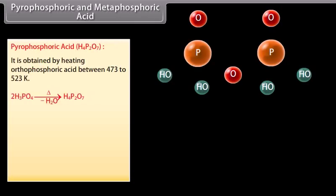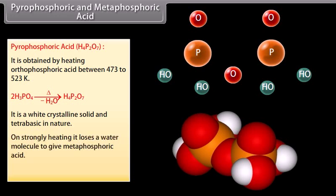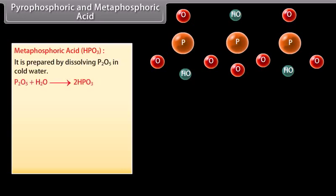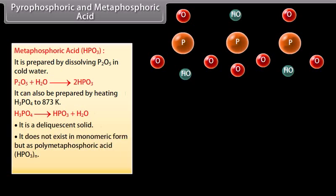Pyrophosphoric acid is obtained by heating orthophosphoric acid between 473 to 523 Kelvin; it is a white crystalline solid and tetrabasic in nature. On strong heating, it loses a water molecule to give metaphosphoric acid. Metaphosphoric acid can be prepared by dissolving P2O5 in cold water or by heating H3PO4 to 873 Kelvin. It is a deliquescent solid that does not exist in monomeric form but as polymetaphosphoric acid (HPO3)n. It is a monobasic acid.